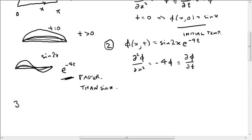So in general, so example 3 is going to be for sine nx, we're going to need a factor of e to the minus n squared t in our solution. So this is how the initial distribution, sine nx, changes.